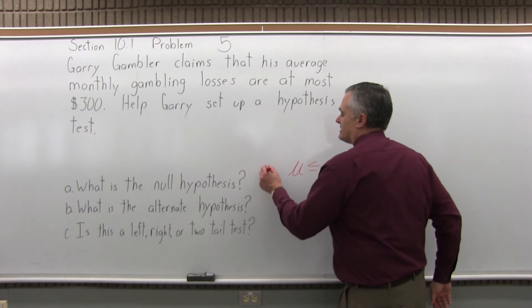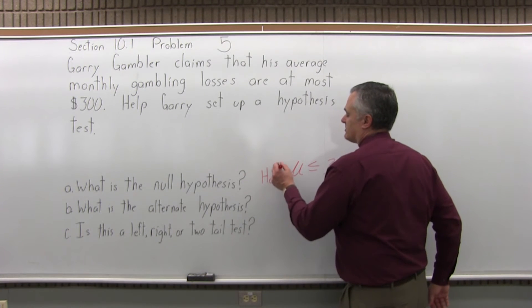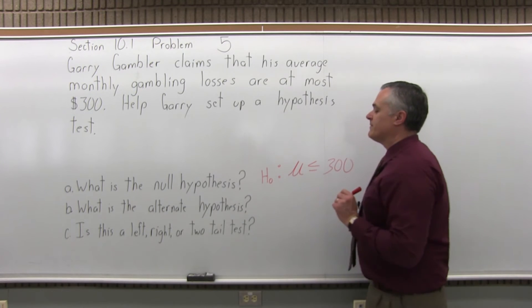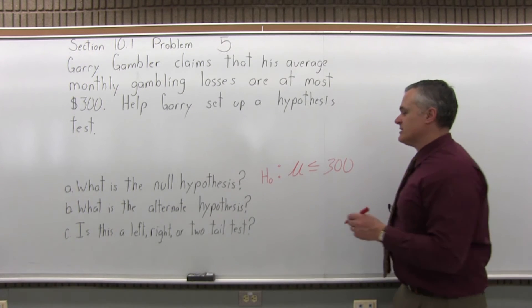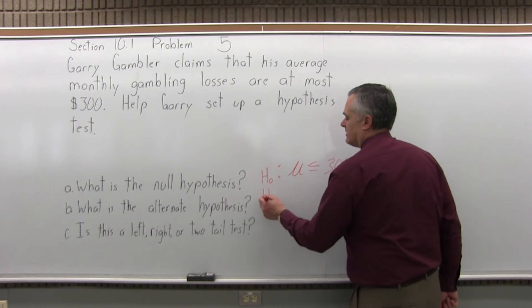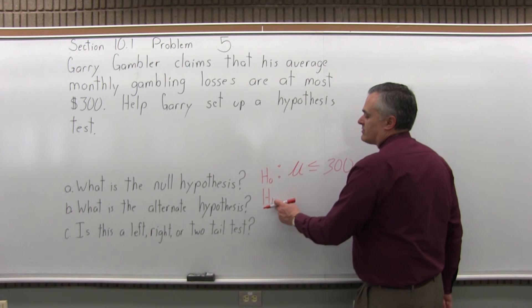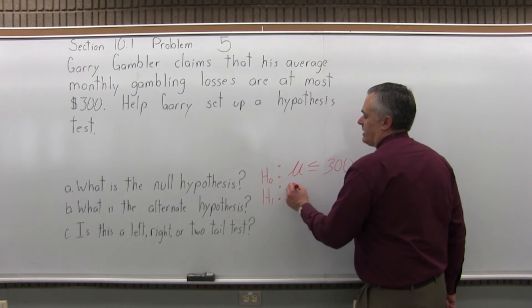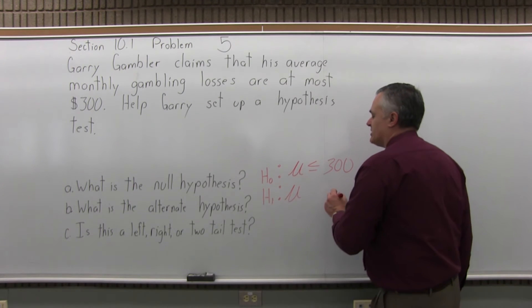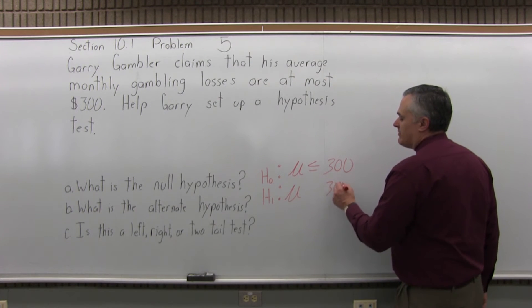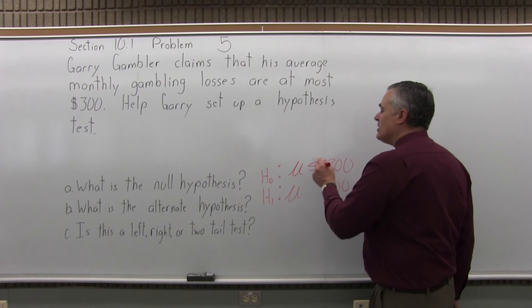So now, if that's the null hypothesis, the symbol would be capital H with a subscript of 0 and we put our colon. The alternate hypothesis would be the opposite. H capital H with a subscript of 1 for alternate hypothesis, the colon, the same mu, the symbol for population average, the same number 300 in this case, but it would be the opposite.